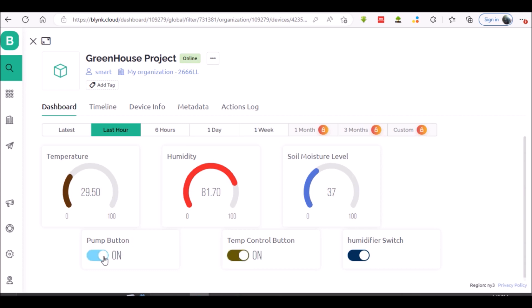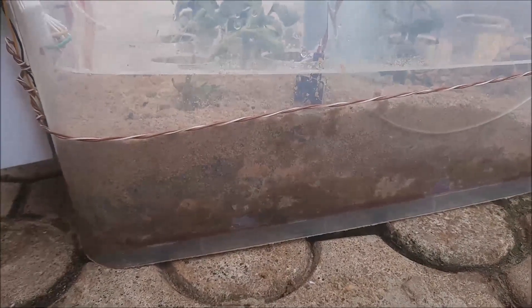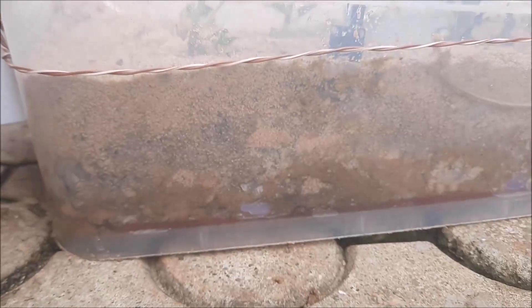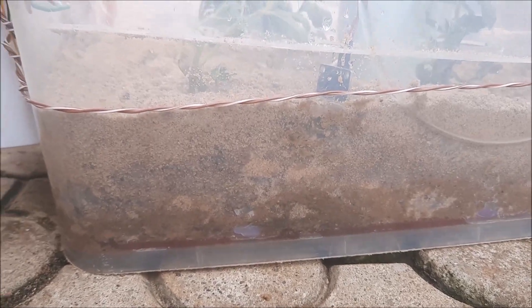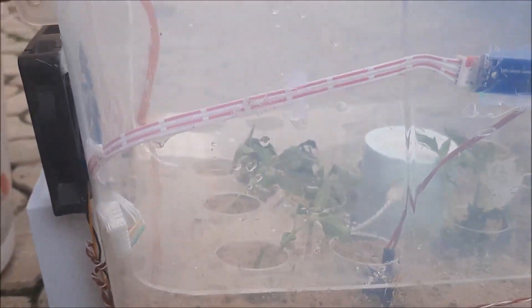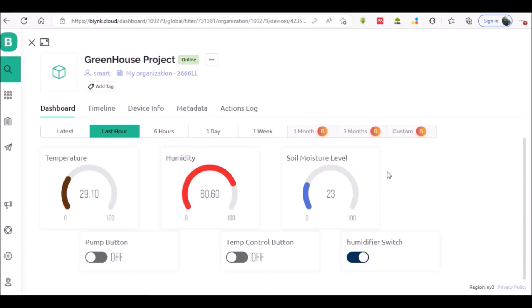The pump switch button also complies to this same rule. Although we may not see the water sprinkling under the soil level, we can see the soil moisture sensor returns an increase in the value of the water level in the soil.